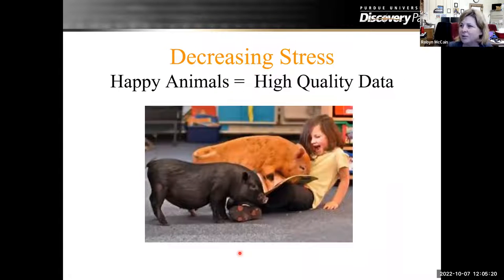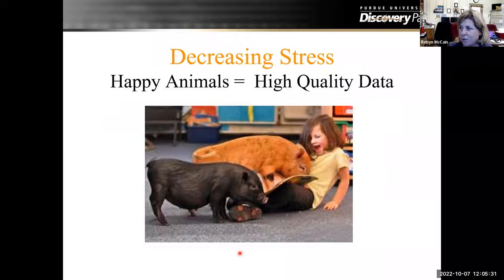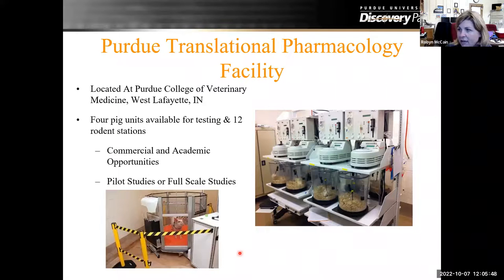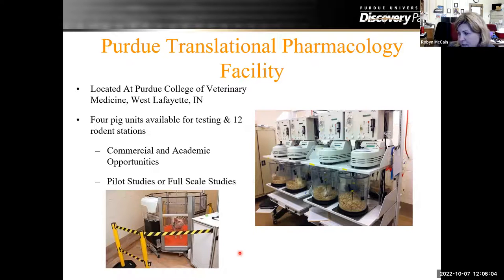One thing that we try to do is decrease the stress, because kind of like the happy cows equals better milk product in California — happy animals increase your high quality data. Here at the Purdue Translational Pharmacology facility, we use the Culex and the Culex-L to do automated blood sampling from our animals. We're located at the College of Veterinary Medicine. We have four units for swine and 12 units for rodents. They're used for commercial and academic opportunities, as well as pilot studies and full scale studies, and can be used in a lot of different arrangements.